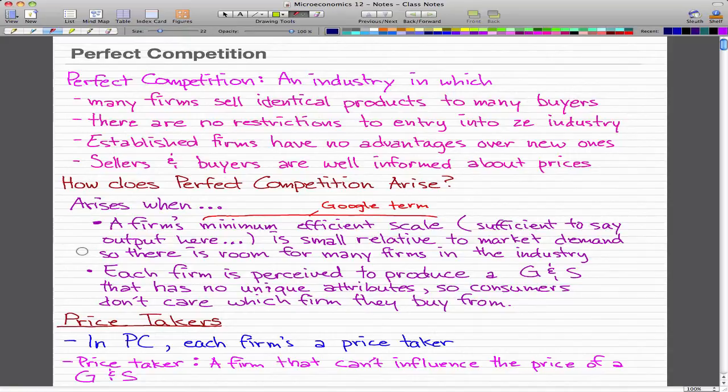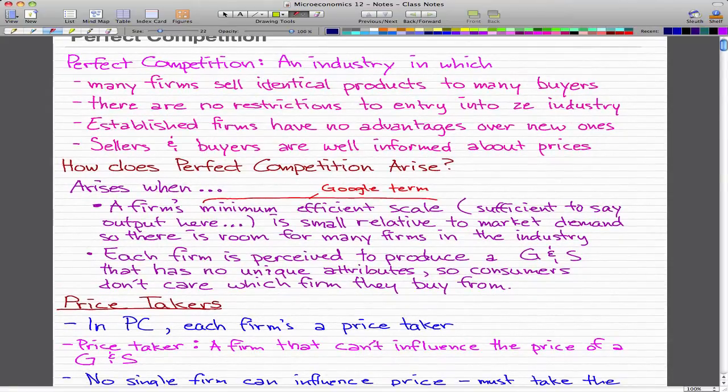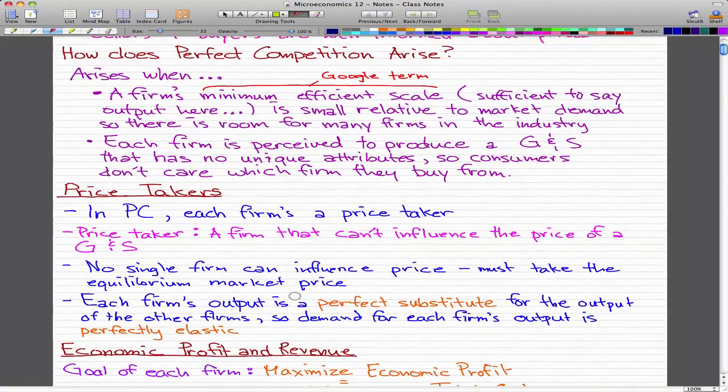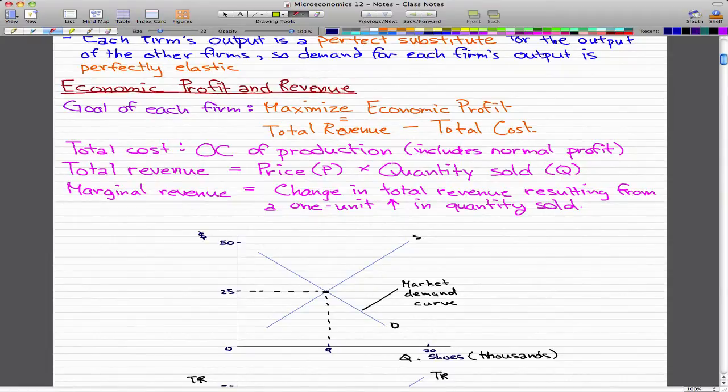Now, a definition on price takers: in perfect competition, each firm is a price taker. That means a firm cannot influence the price of a good or service. No single firm can influence price; it must take the equilibrium market price. Each firm's output is a perfect substitute for the output of other firms, so the demand for each firm's output is perfectly elastic.